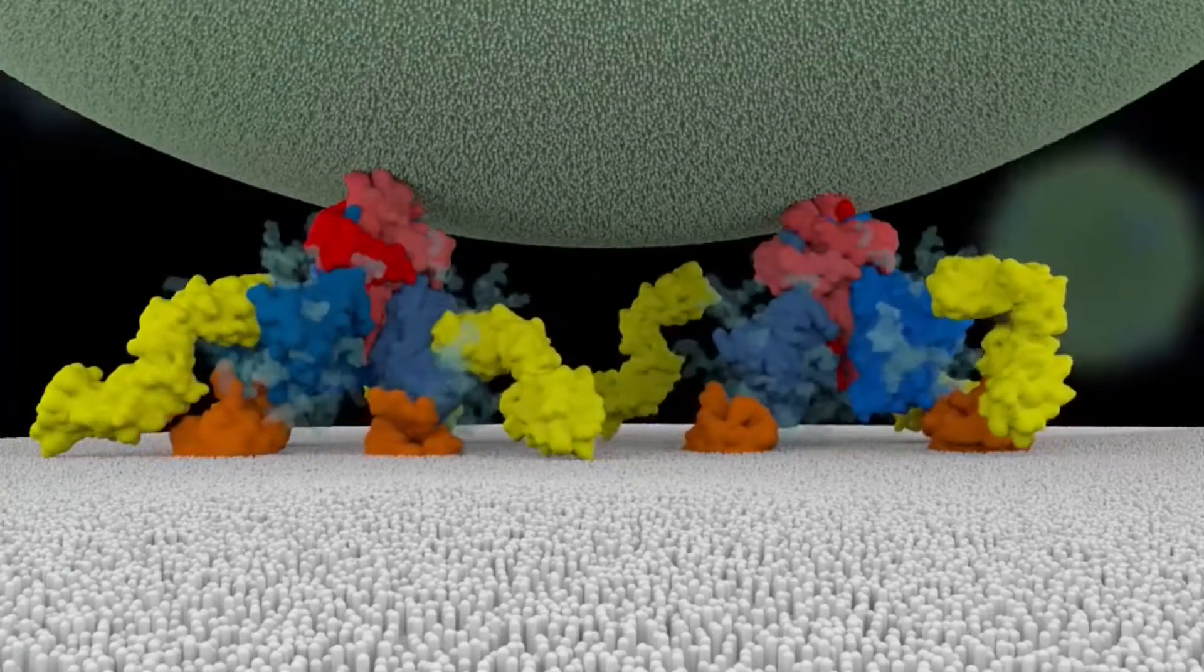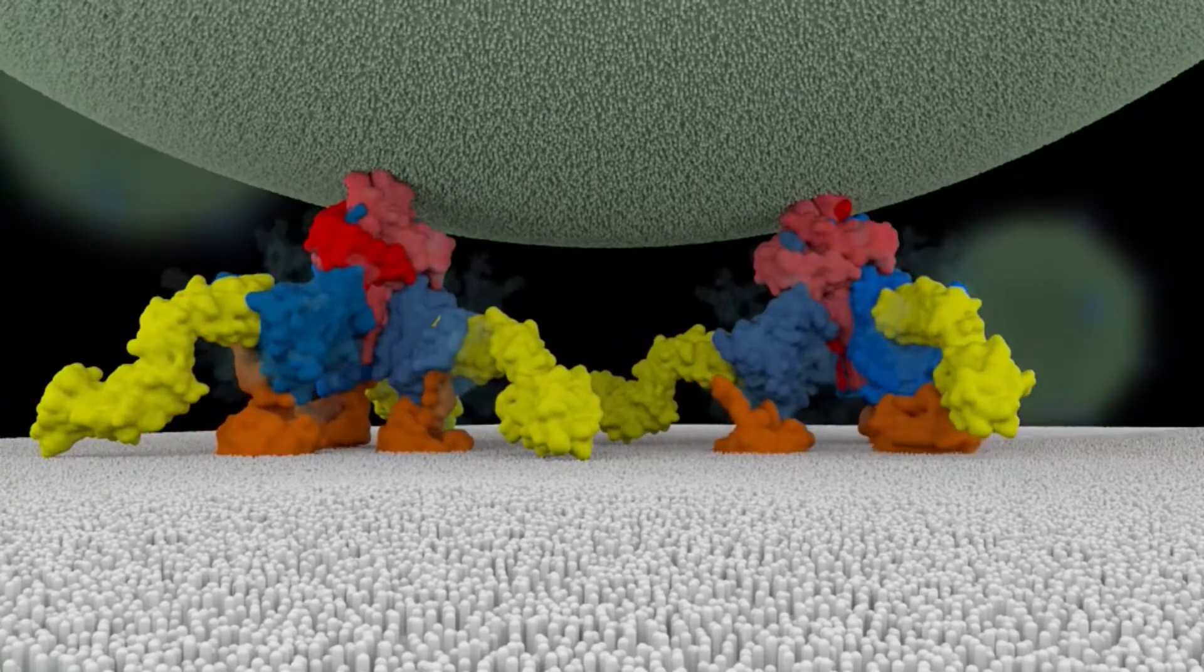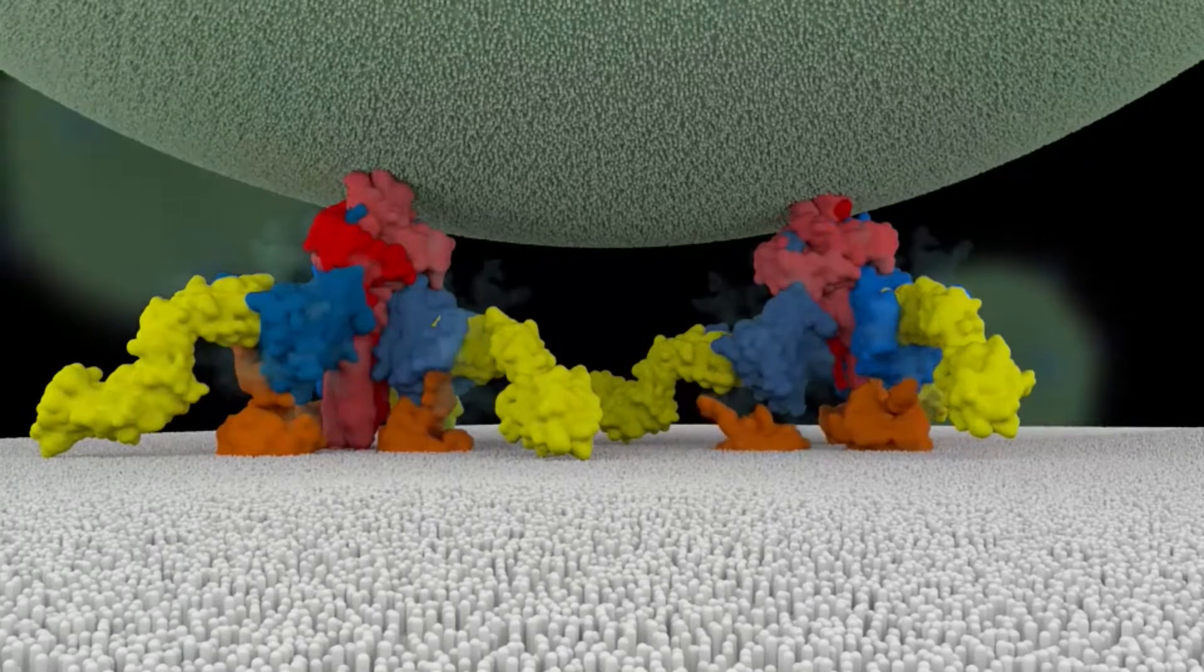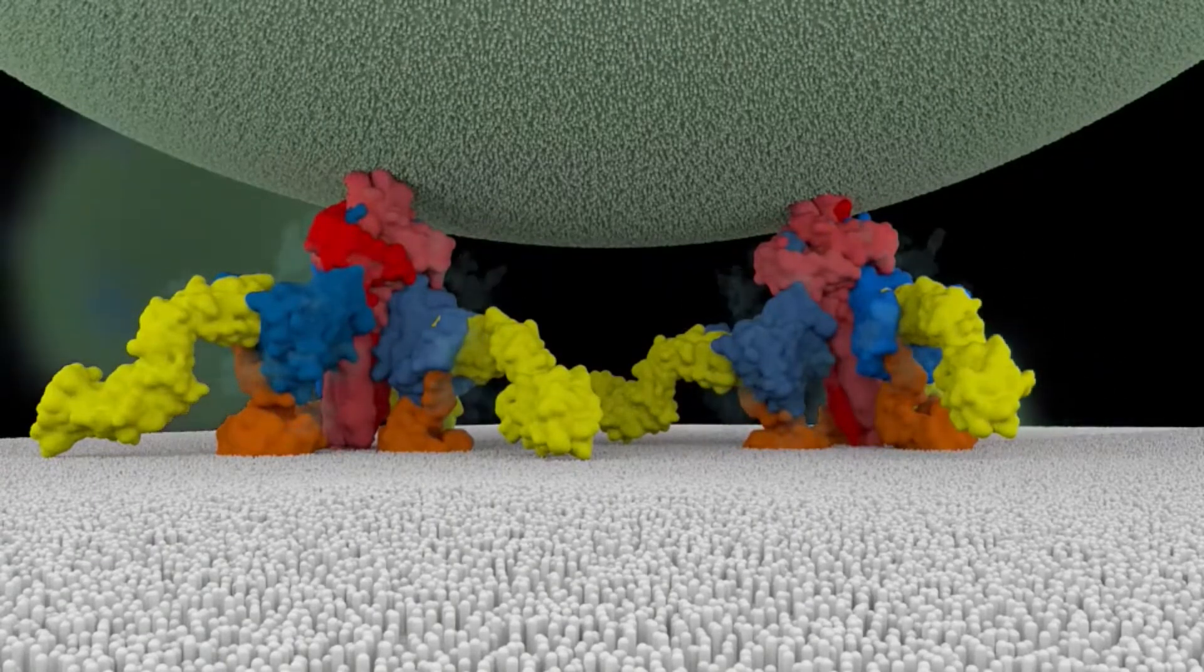Binding of a second membrane protein, called a co-receptor, shown here in orange, triggers a dramatic change in shape of envelope protein. The first conformational change allows envelope protein to insert into the membrane of the T cell.